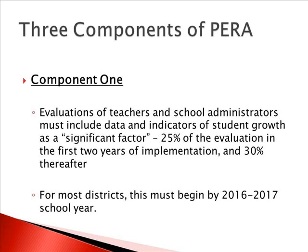The lowest performing 20% of school districts in the state of Illinois must include student growth in their evaluations by September of 2015. Then the remaining school districts in Illinois will be required to include student growth as a part of their evaluation process by the beginning of the school year in 2016.